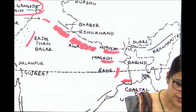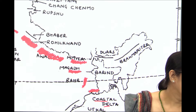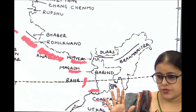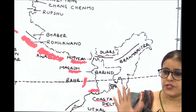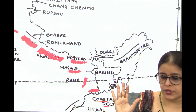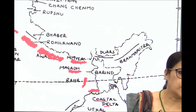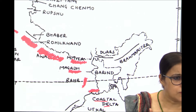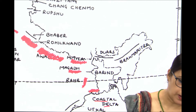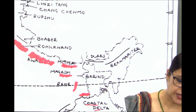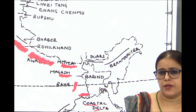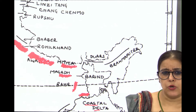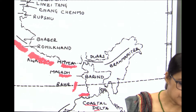Then continue, move towards the northeast. You know that you have to mark Duvars — you know it is in Subhiwali and West Bengal. And then go to Brahmaputra plain, the way I have marked. Brahmaputra plain, Assam — done. This is how we have learned the northern plains of India.